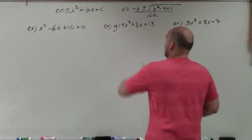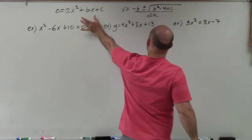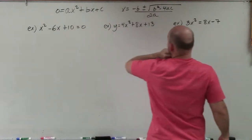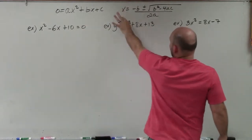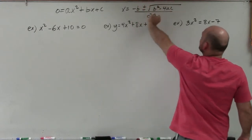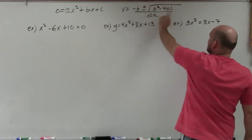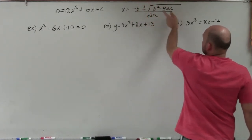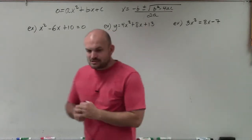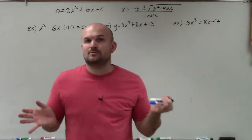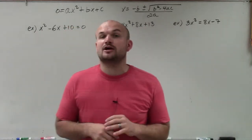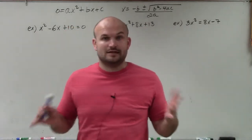We want to have it in this form. And when we have it in this form, using the quadratic formula, we have x equals the opposite of b, plus or minus the square root of b squared minus 4 times a times c, all over 2a. The main important thing we're going to want to do here is make sure that our equation is set equal to 0.